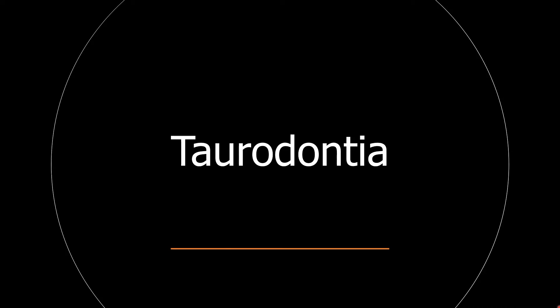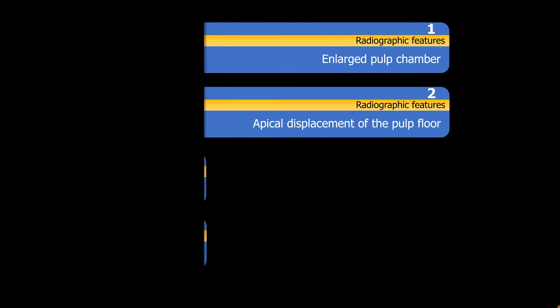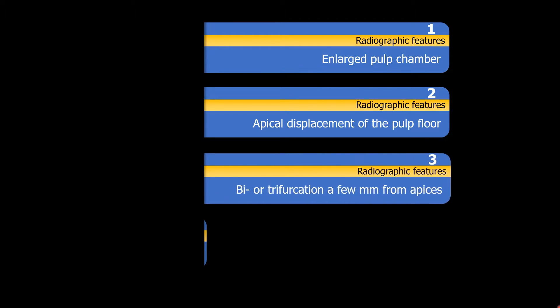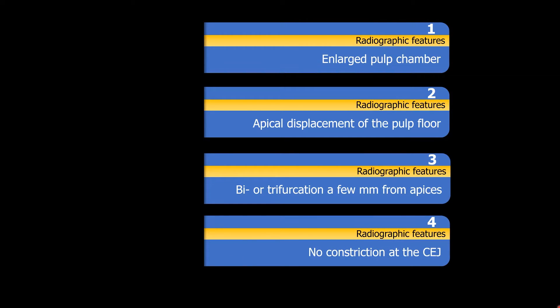So you must have figured out the diagnosis is pterodontia. The radiographic features include a large pulp chamber, the pulp floor is displaced almost towards the apex, the bifurcation or trifurcation is only a few millimeters from the apices, and there is no constriction at the CEJ.